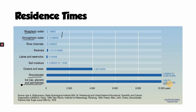Once water falls as snow and gets locked away in an ice cap, it will be locked away for a very long time. The broad range for groundwater residence time — from two weeks to 10,000 years — reflects the fact that it depends how deep into the groundwater the water actually goes. If it trickles into surface groundwater and ends up in a river quickly, that could happen in a couple of weeks. But if it makes its way deep into a fossil aquifer, that water could be there for tens or hundreds of thousands of years before being released through pumping or seeping into rivers.